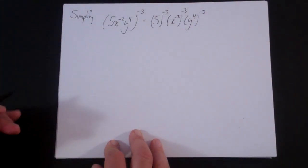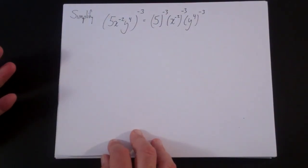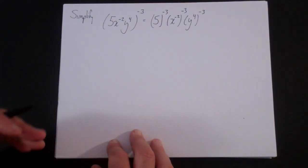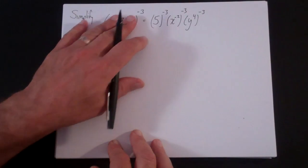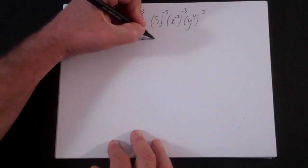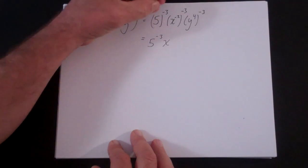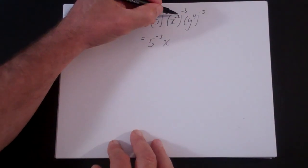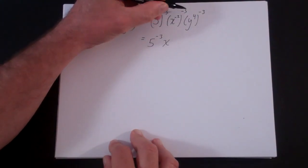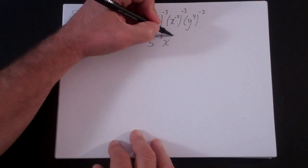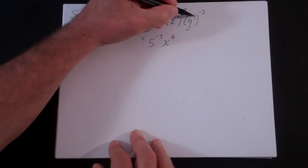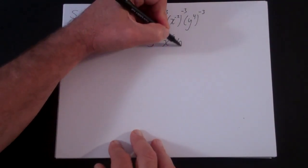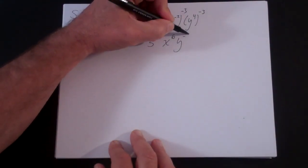The first thing I want to do is simplify when you have something in parentheses raised to a power. That gives us 5 to the minus 3, then x: negative 2 times negative 3 — a negative times a negative is a positive — so that becomes x to the positive 6. And y to the 4 to the negative 3 becomes y to the minus 12.